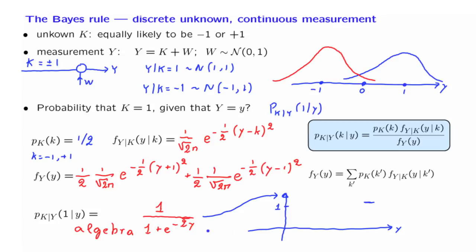If, on the other hand, Y is very, very negative, so Y goes to minus infinity, here we get e to the infinity, which is a very large number. So this ratio is going to converge to 0. So we have a graph that starts at 0. It actually rises monotonically, and in the limit converges to 1.